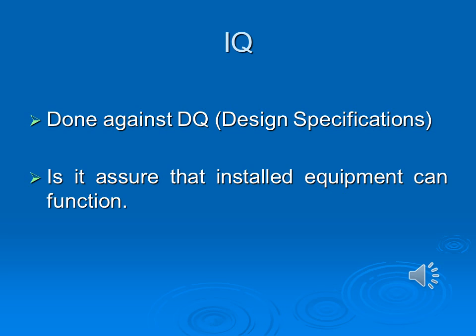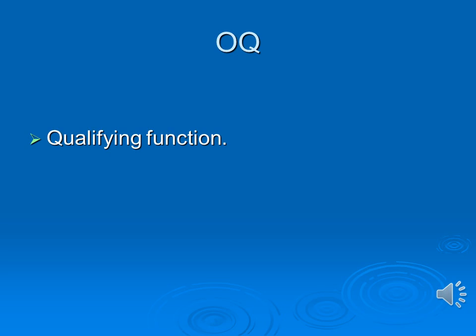Installation qualification (IQ) is demonstrating and certifying that a piece of equipment is properly installed and is provided with all necessary services, subsidiary equipment and instruments, and is capable of performing in accordance with its basic design parameters. Operational qualification (OQ) consists of demonstrating that the equipment will perform consistently and within predefined limits as specified and installed.